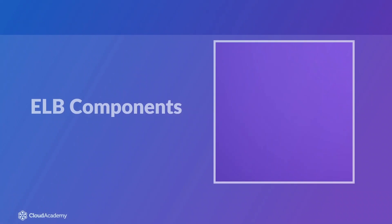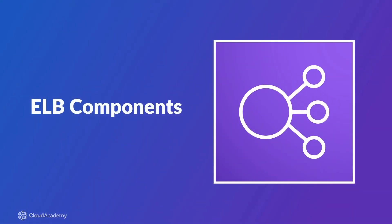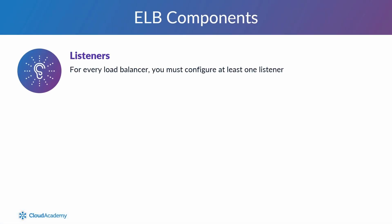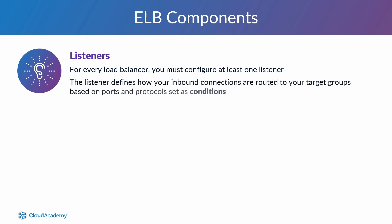Let me now talk about the components of an AWS ELB. Listeners: for every load balancer, regardless of the type used, you must configure at least one listener. The listener defines how your inbound connections are routed to your target groups based on ports and protocols set as conditions. The configurations of the listener itself differ slightly depending on which ELB you have selected, and I will dive into the configuration of these as I discuss each ELB in further detail in upcoming lectures.